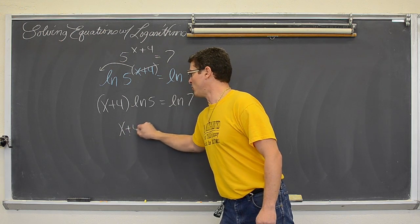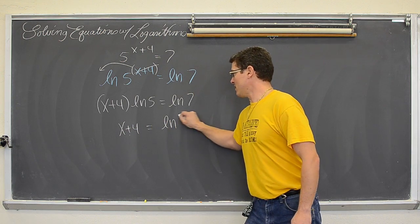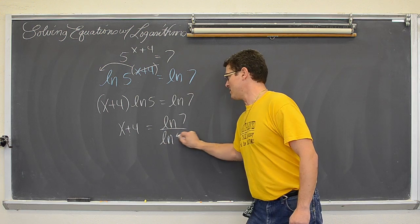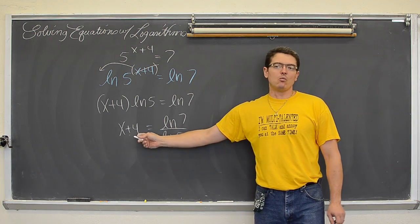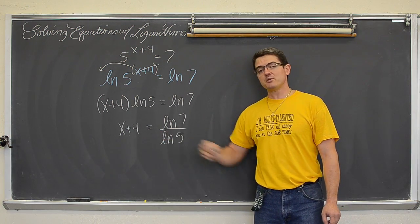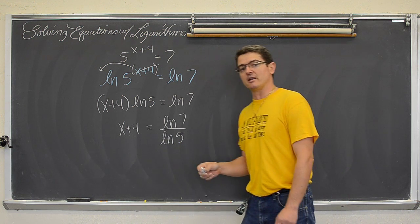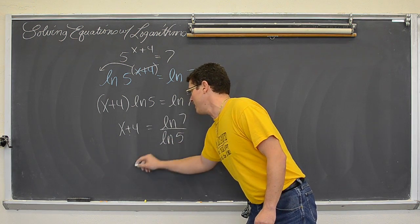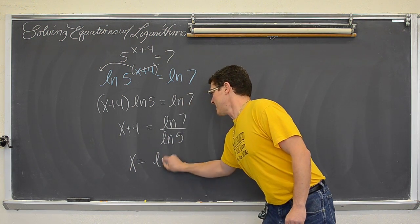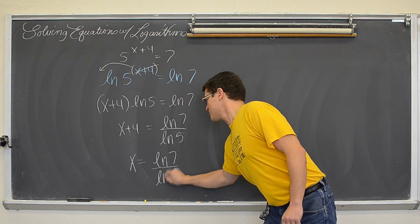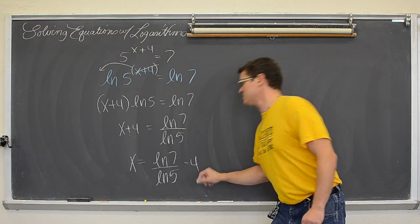And get x plus 4 equals the natural log of 7 divided by the natural log of 5. Now I have only got one step left which is subtract both sides by 4 and I have my final answer for my equation. So x equals the natural log of 7 divided by the natural log of 5 minus 4.